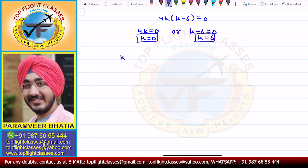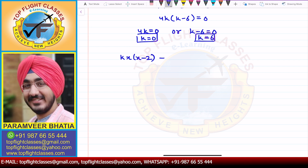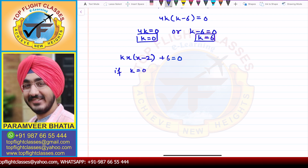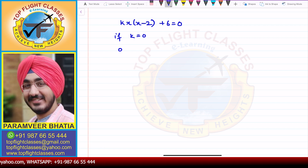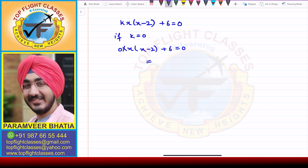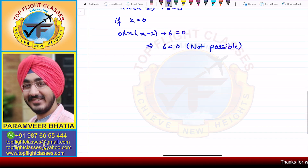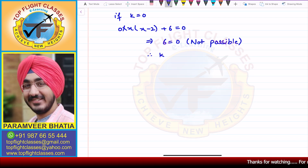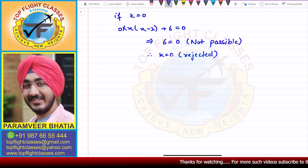The original equation is k(x)(x - 2) + 6 = 0. If k = 0, we get 0 × x(x - 2) + 6 = 0, which gives 6 = 0 — that is not possible. Therefore k = 0 is rejected. The only valid value is k = 6.